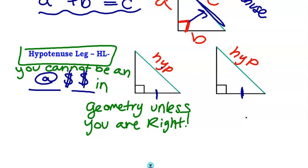So hypotenuse and leg. And why is that? Because if I have the hypotenuse and the leg, I then can figure out the third side and then I have S-S-S.